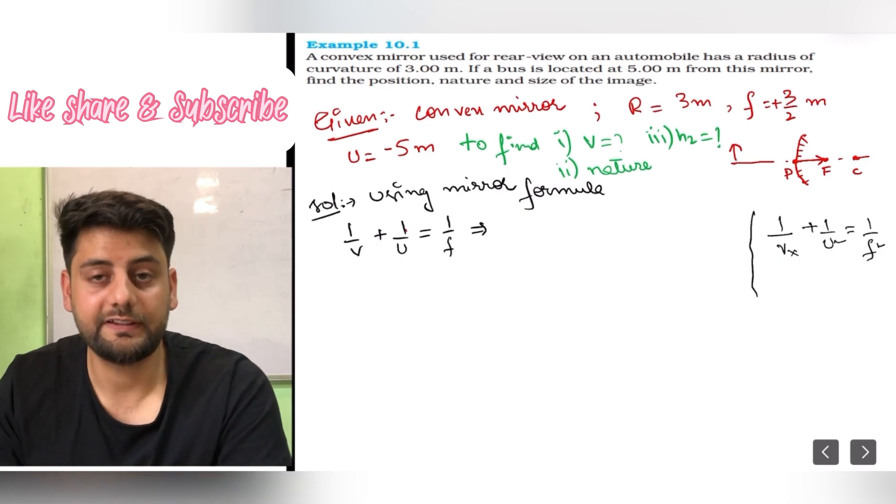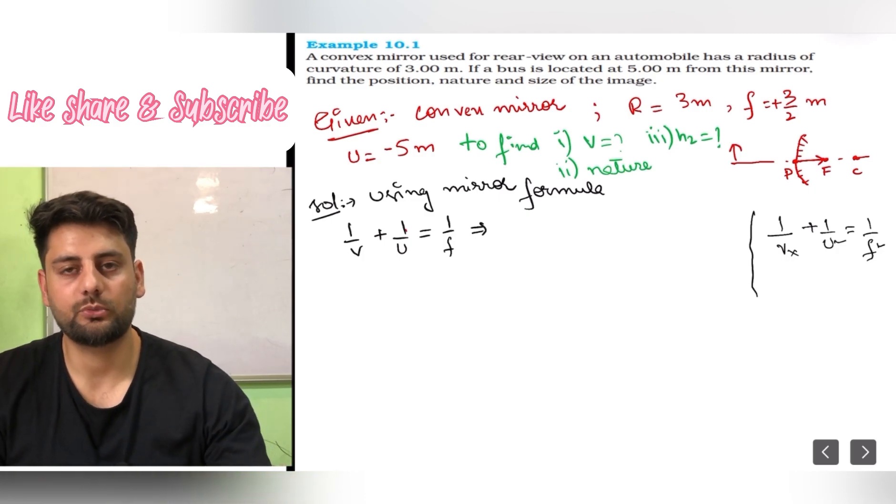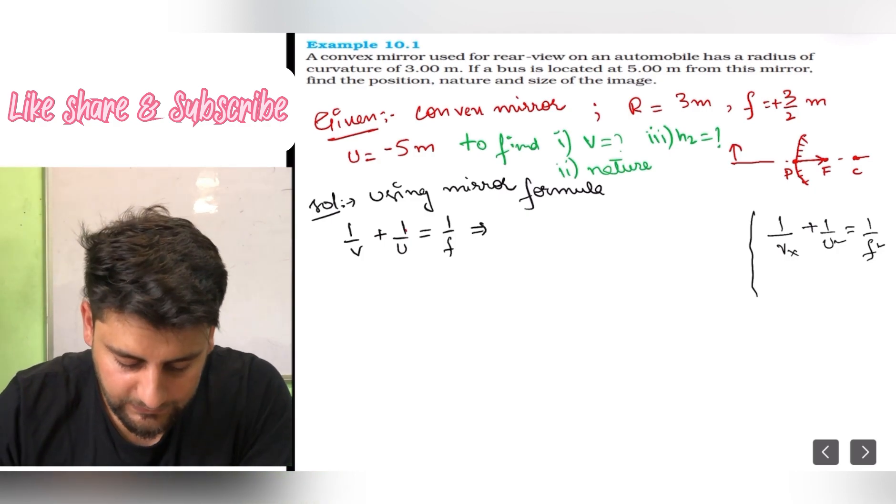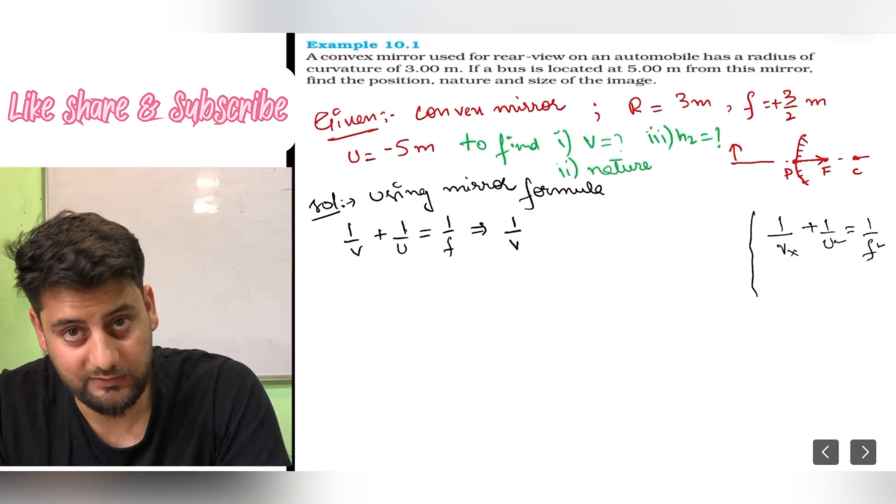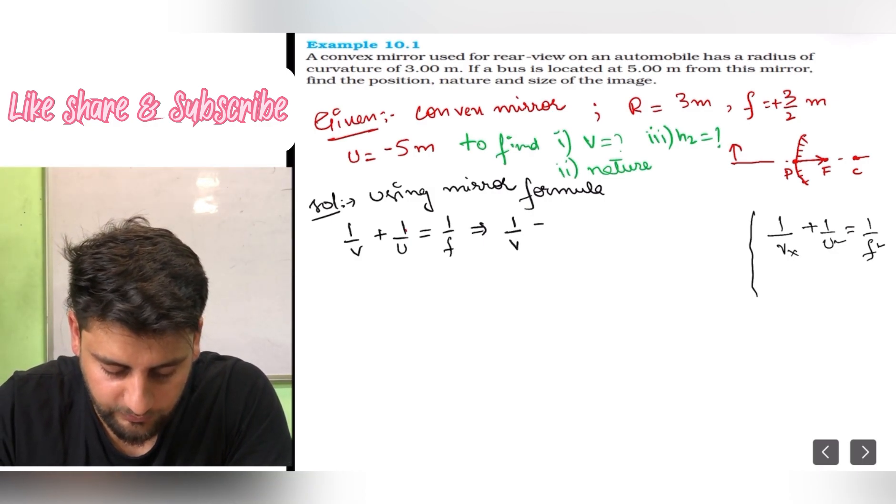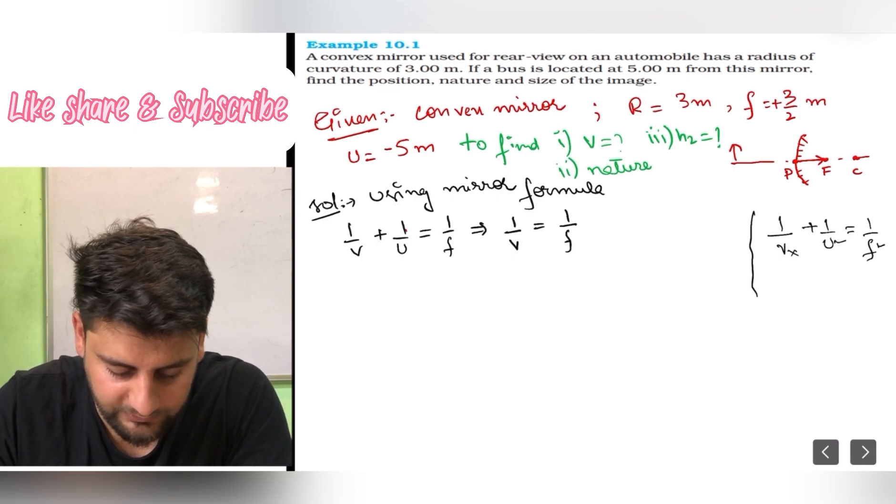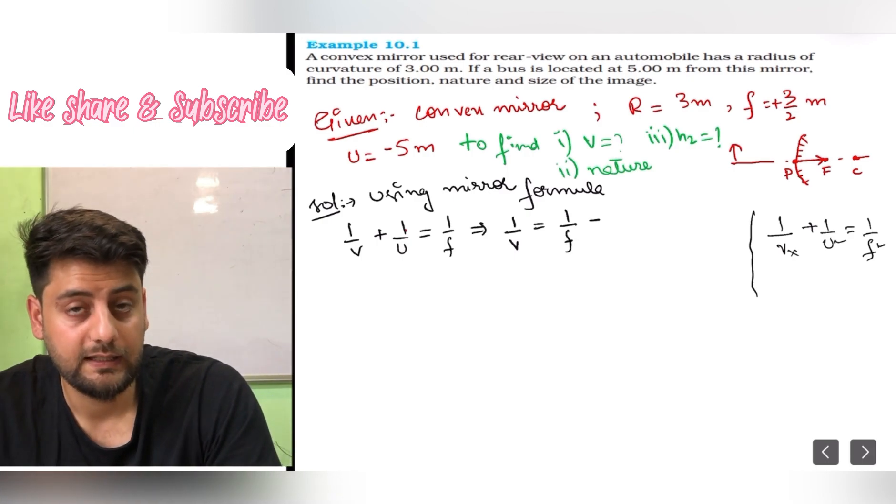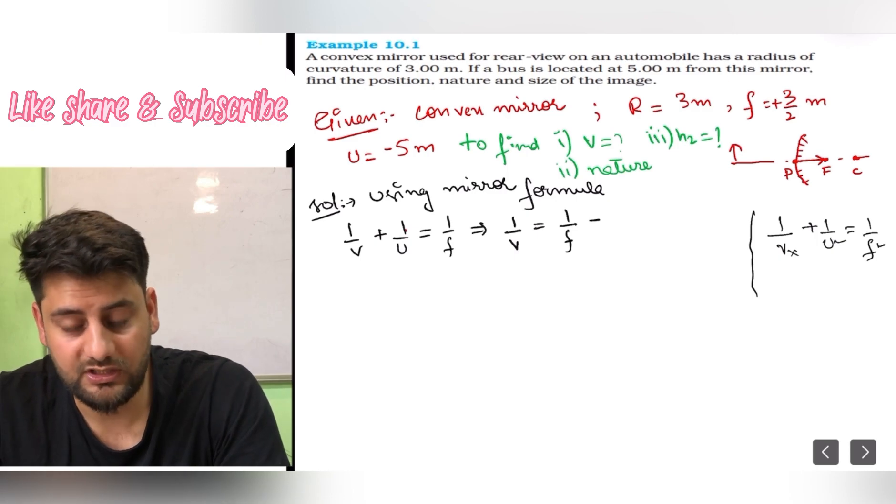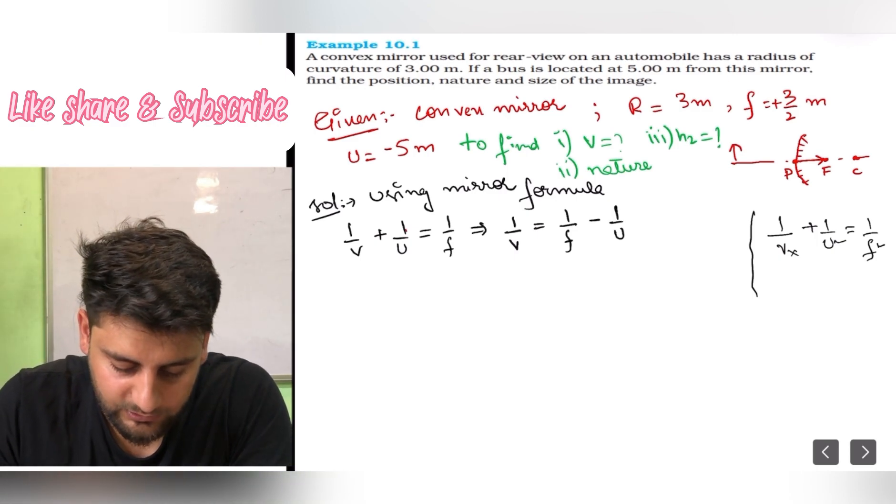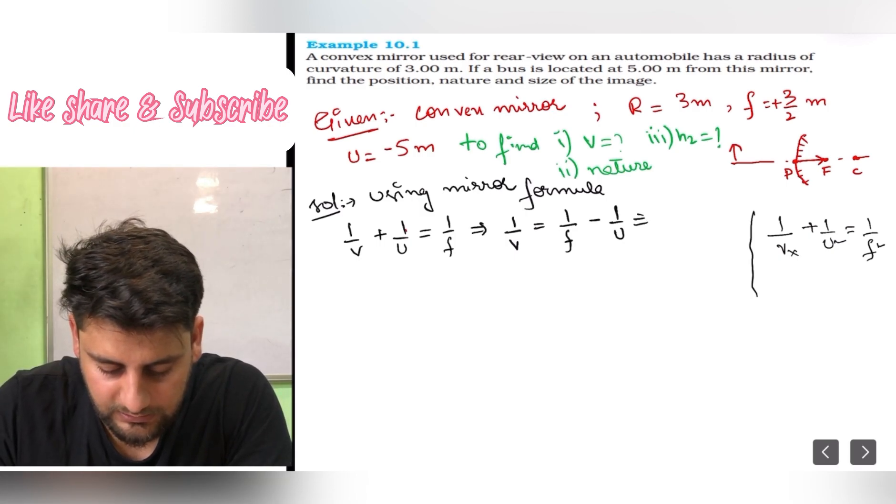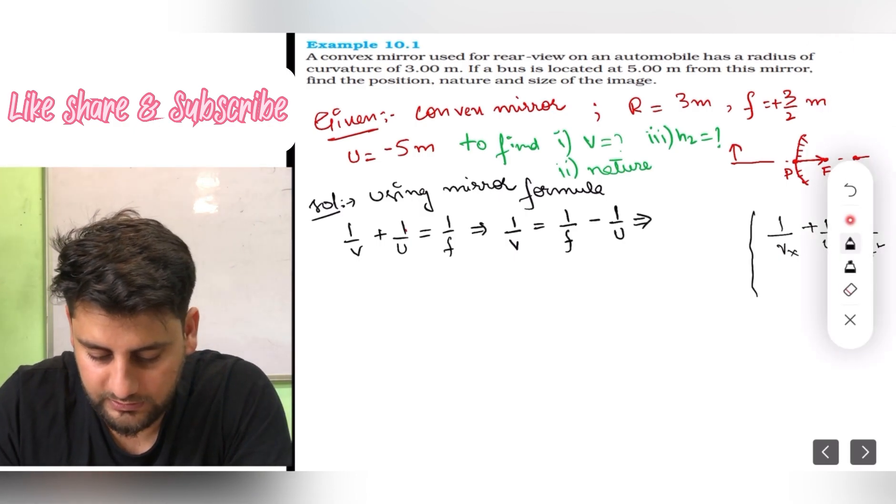Using mirror formula, 1 by v plus 1 by u is equal to 1 upon f. Now let's shuffle the formula first, then we'll put the values. So I will put 1 upon v equals 1 upon f minus 1 upon u, because I need v so I'll keep it on one side.